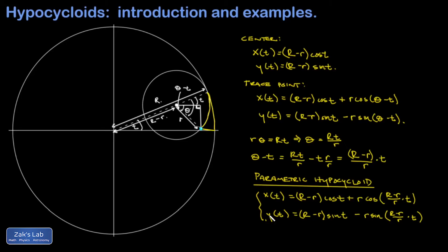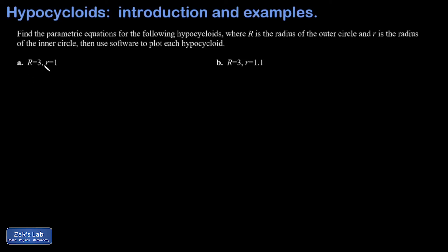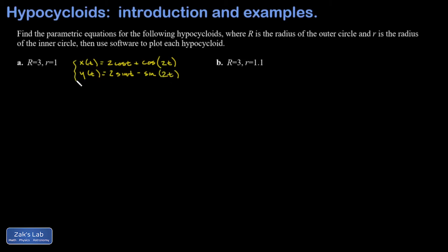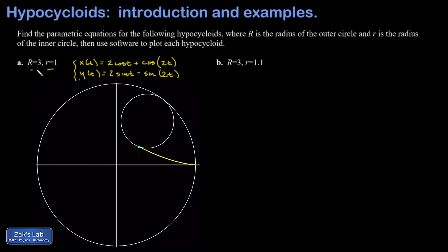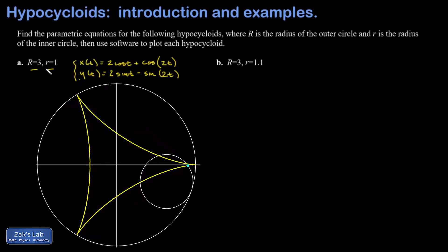In the first example, big R equals 3 and little r equals 1. Plugging in: R − r = 2, so x(t) = 2cos(t) + cos(2t) and y(t) = 2sin(t) − sin(2t). Animating this produces exactly the same three-pointed hypocycloid shown at the start. When the radius of the smaller circle is one-third the radius of the bigger one, it takes exactly three rolls of the small circle to complete the curve.